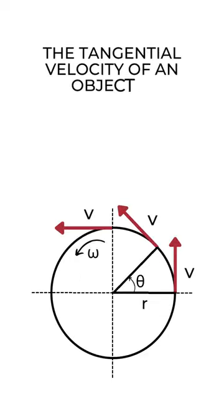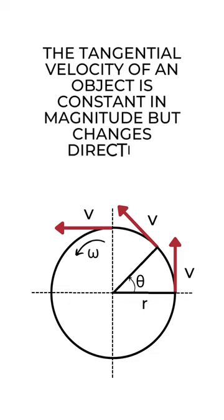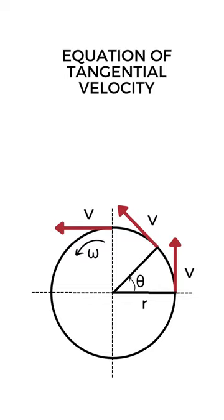In uniform circular motion, the tangential velocity of an object is constant in magnitude but changes direction continuously. The tangential velocity of an object can be calculated using the following equation.